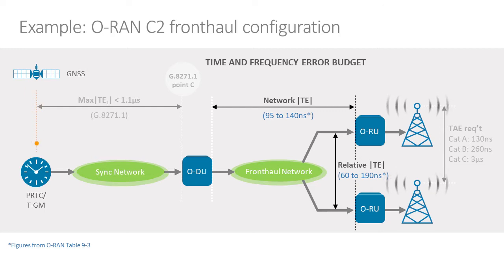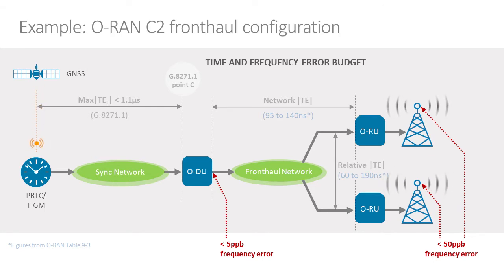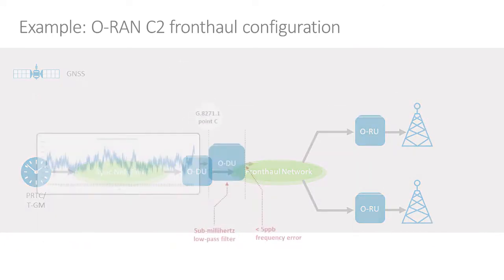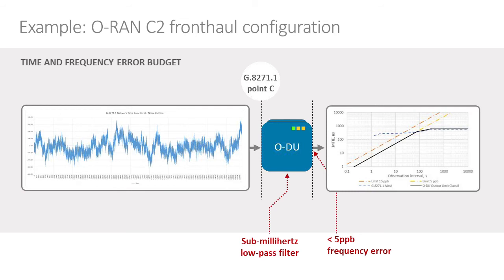There is also a frequency requirement on the transmission on the air interface, and that's going to work its way all the way back through the network. For the ODU itself, that output is going to have a specification for the frequency error it can contribute. In terms of timing performance, one of the key things that the ODU is going to need to do is to correctly apply a sub-millihertz low-pass filter. That input timing performance meeting the ITU-T requirement is going to be a noise pattern, so the ODU is going to need to tolerate that, and then on the output, we've got the requirement — for example, the 5 parts per billion frequency error requirement.